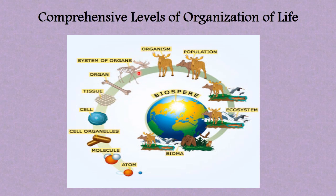But here we have the comprehensive level of organization starting from the atom — the smallest part of an element. Various atoms combine to form a molecule, and different molecules come together to form cell organelles. Various cell organelles are found in the cell. A group of similar cells forms tissue, a group of similar tissues forms organs, and different organs working together form the organ system, which is found in a particular species of living organisms.